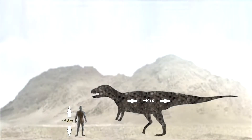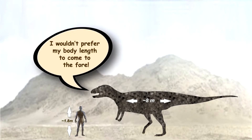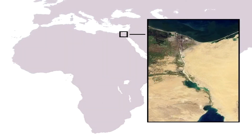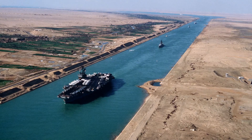Have you ever thought that the depth of approximately one dinosaur length can be a reason for a custom food web change? In the late 1800s, people probably didn't think about this issue while they were opening the Suez Canal, which connects the Red Sea and the Mediterranean Sea.